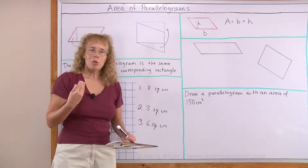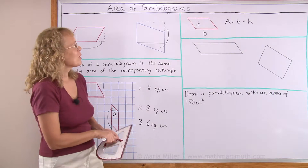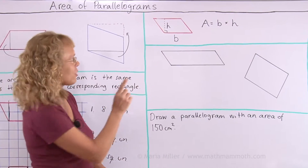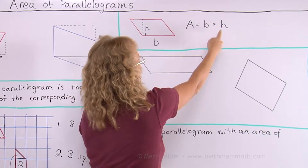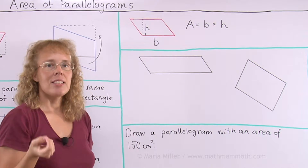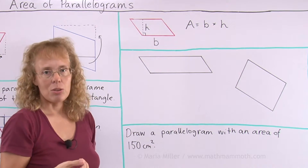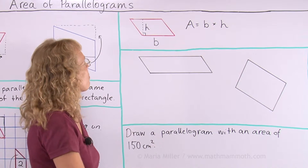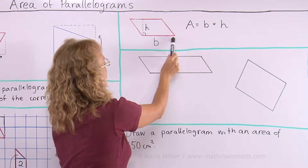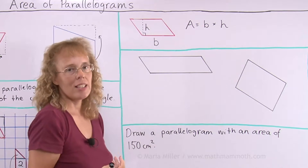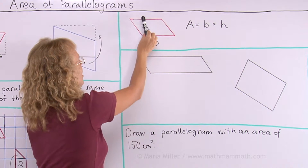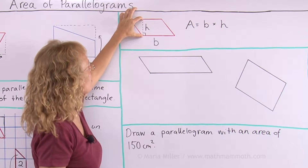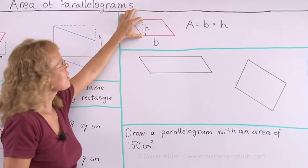Now in most school books, we are given the area of a parallelogram with this formula: A equals B times H. B is the base, H is the altitude or height. And I have marked them in this figure. B is the base — this side here, like your bottom side so to speak. Height is always perpendicular to the base.